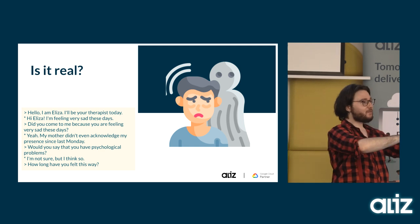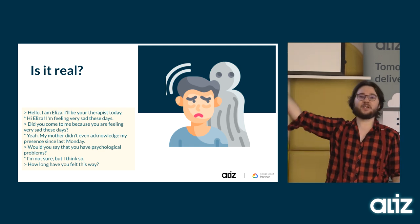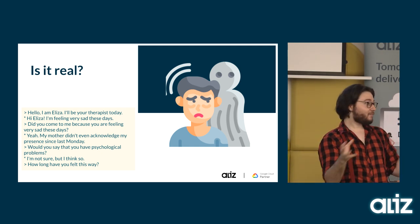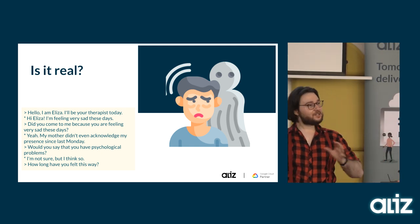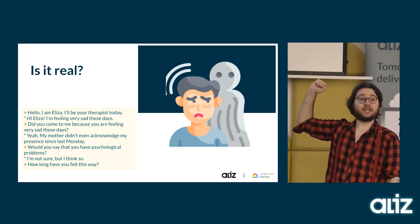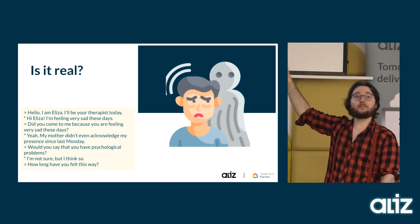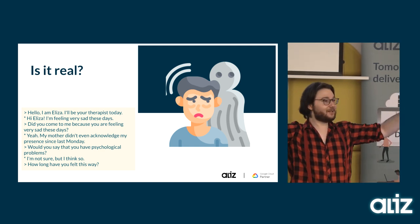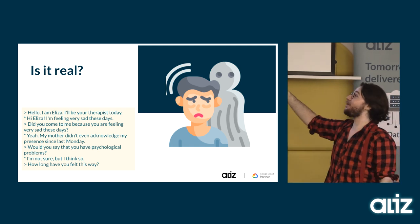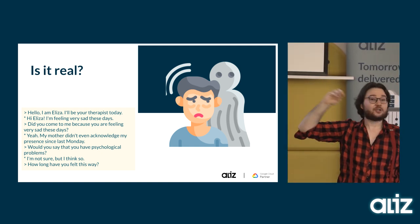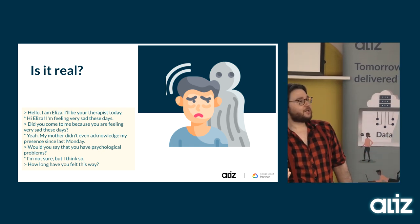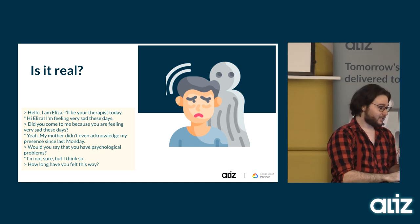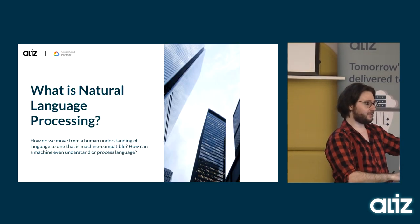Eliza had a few very basic tricks. Usually it would just repeat what you said and say 'how do you feel about that?' If you didn't write to Eliza for a while, it would ask 'are you still there?' It was a university project, and people believed it was a real human being. Even some of you believed it right now, even though there's nothing smart about it. The trick was asking questions about the other person — humans love to talk about themselves.